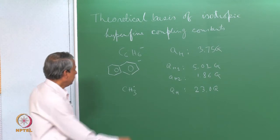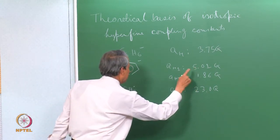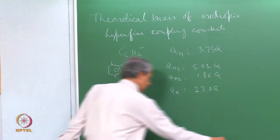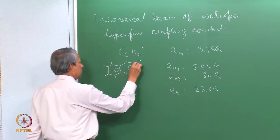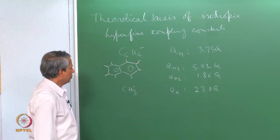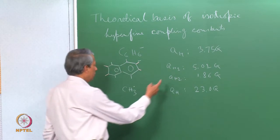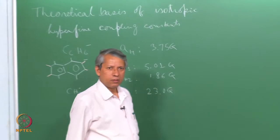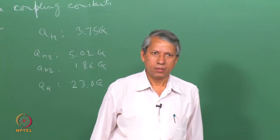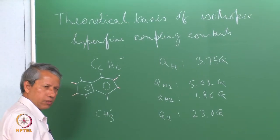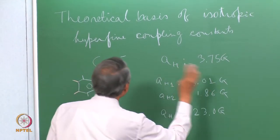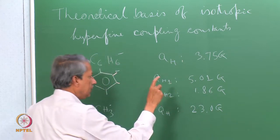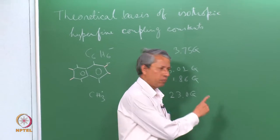Compared to those, if we take the methyl radical with 3 equivalent nuclei, the coupling constant is 23.0 gauss — quite different. For naphthalene, the two coupling constants correspond to two different sets of equivalent nuclei, but from experiment alone there is no way to assign which value belongs to which set. Can theoretical calculation help us with that assignment? That is the aim of today's lecture: to connect the observed value to some theoretical model of the wave function, which can either predict or help assign these values, and also check how good the wave functions are.